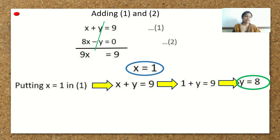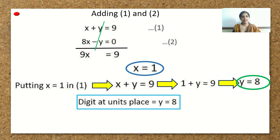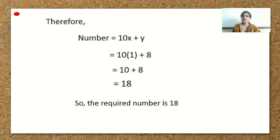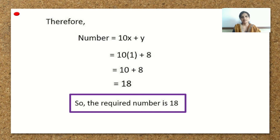We considered the digit at the unit's place as y, which is 8, and the digit at the 10's place as x, which is 1. So the number is 10x plus y: 10 times 1 plus 8, which equals 18. Therefore, the required number is 18. Our sum is correct because the sum of the digits 1 and 8 is 9, which matches the given condition.